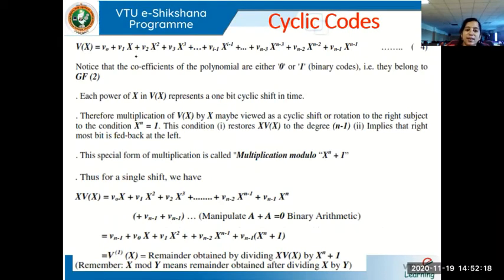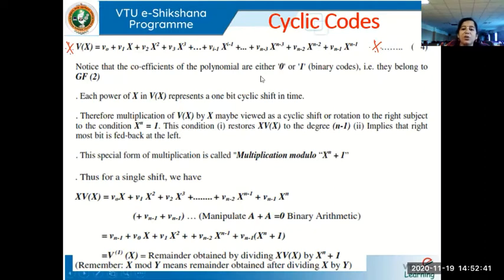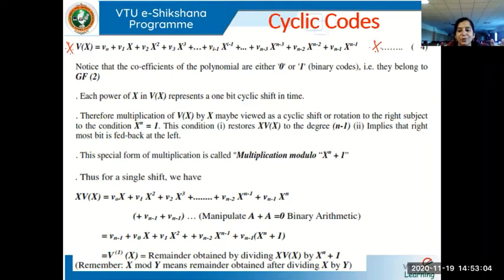Continuing our mathematical analysis of cyclic codes, the coefficients of the polynomial are either 0 or 1 — they are binary values and hence belong to GF(2), Galois field 2. Galois field 2 has only two values, 0 and 1, with two operations: addition and multiplication. It is like binary addition and multiplication. We are working in binary codes in GF(2).